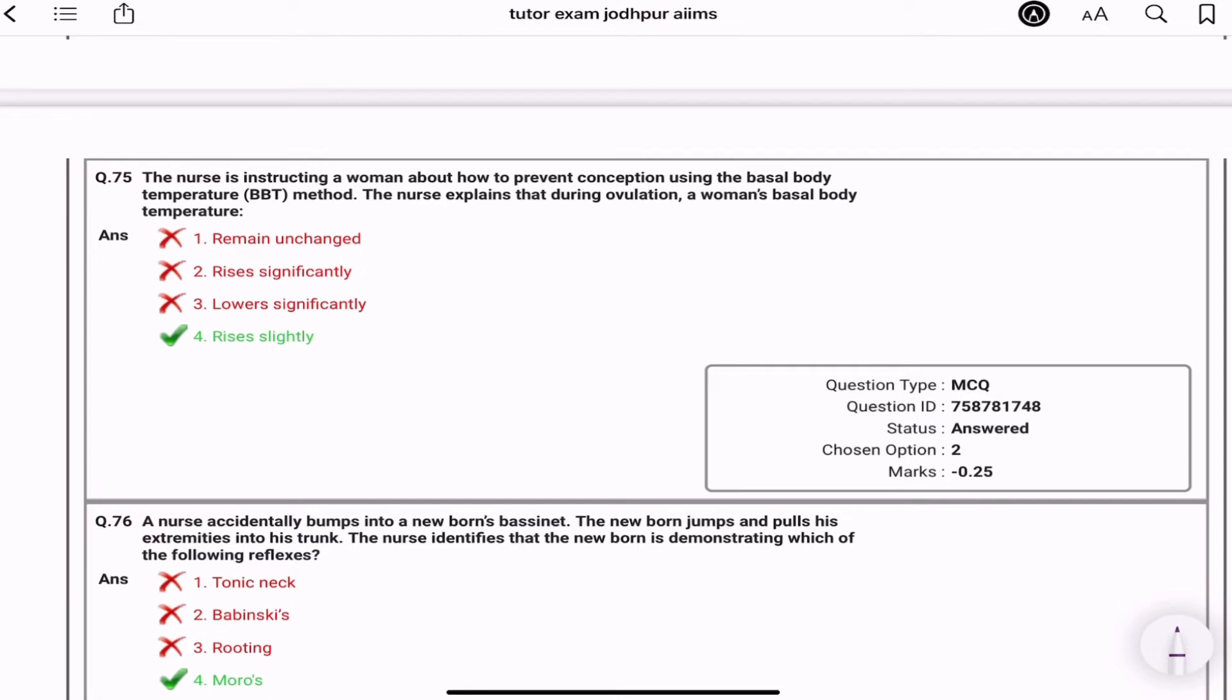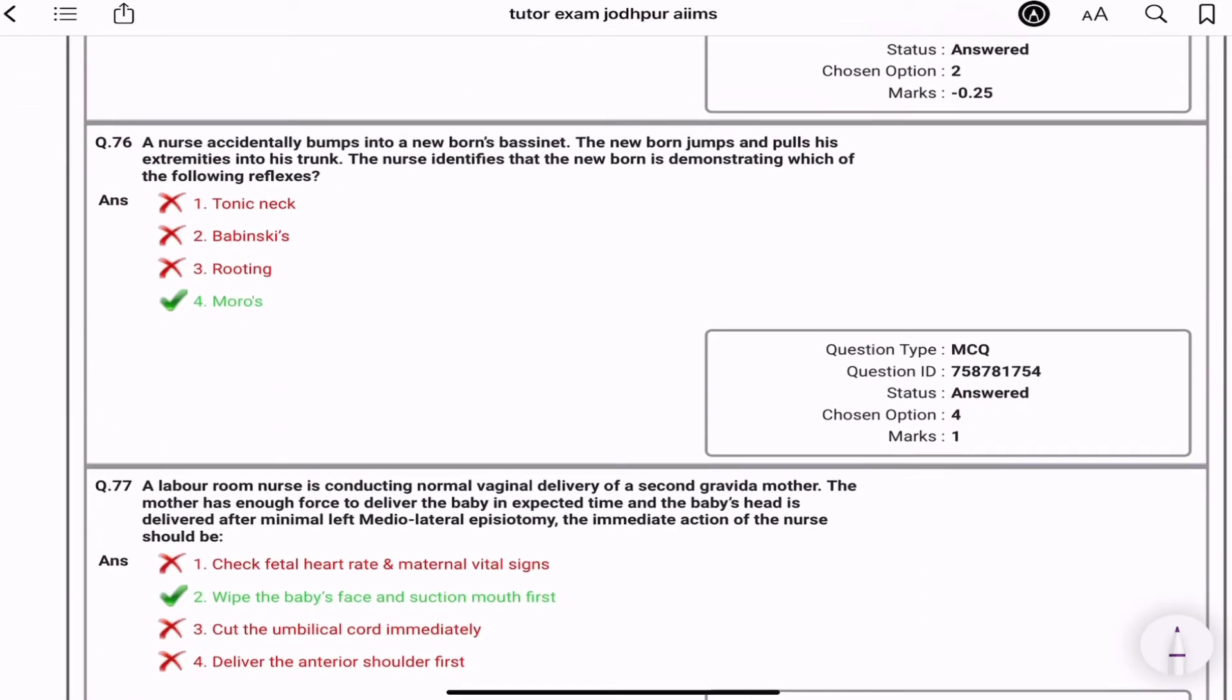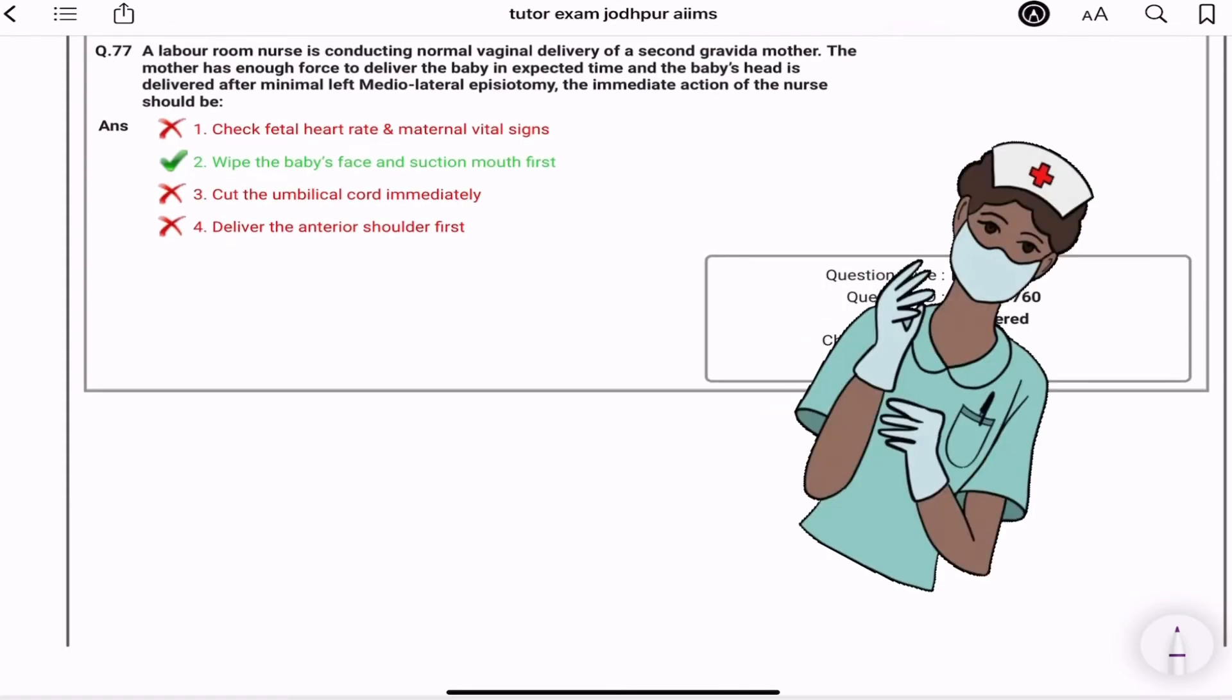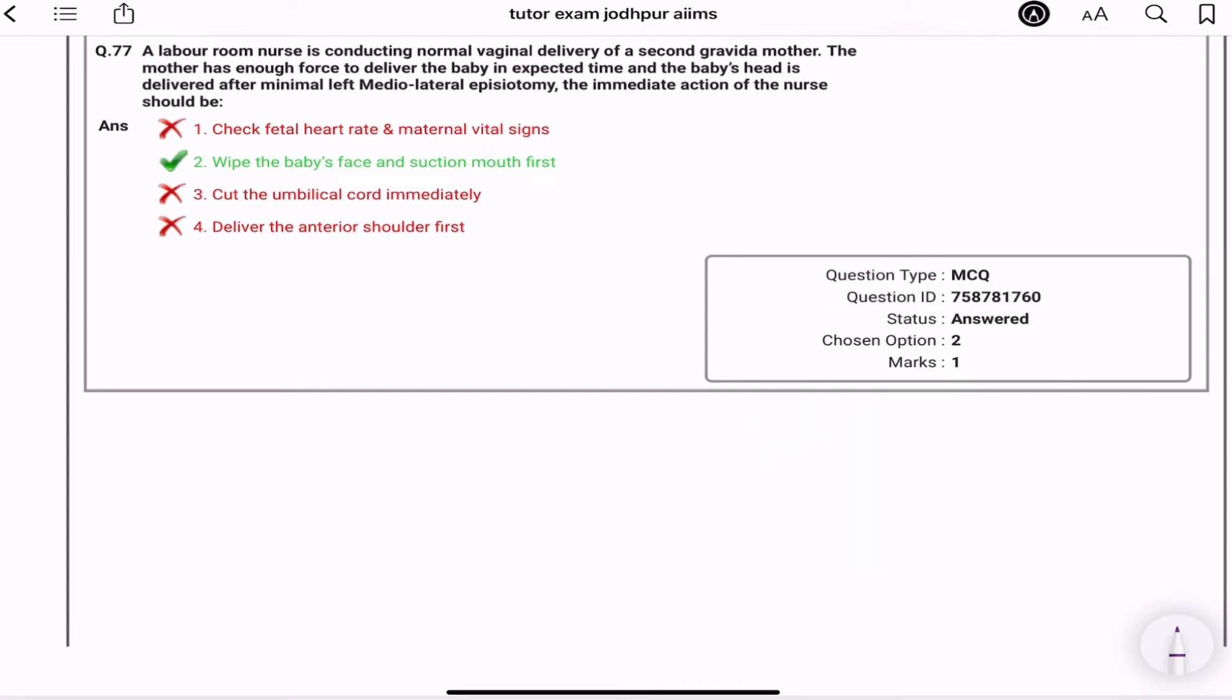A nurse accidentally bumps into a newborn bassinet. The newborn jumps and pulls his extremity into his trunk. The nurse has identified the newborn showed which reflex? Moro. Ek dum se aap ne bump kiya uske bassinet me, matlab uske jo bed hai uspe ek dum se aap gaye, to newborn ek dum se darr gaya. Baby or apne extremities ko towards trunk pull kiya. So Moro reflex. A labor room nurse is conducting normal vaginal delivery for second gravida mother G2. The mother has enough force to deliver baby in expected time and the baby's head is delivered after minimal left mediolateral episiotomy. The immediate action of nurse should be while the baby is born: suction the mouth first.